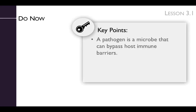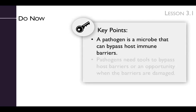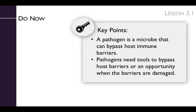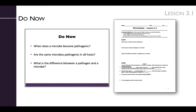The key points of the Do Now are that a pathogen is a microbe that can bypass host immune barriers, and pathogens need tools to bypass host barriers or an opportunity when the barriers are damaged. The Do Now begins by brainstorming what a microbe needs to become pathogenic, asking students to consider the two main factors that impact pathogenicity: the microbe and the host — more specifically, virulence factors and immune barriers.